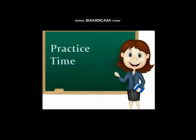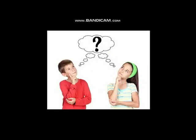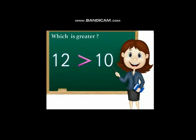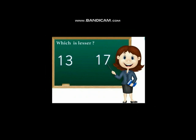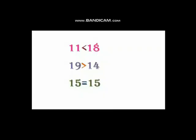Now it is your practice time. I will give you two numbers and you decide which one is greater. The numbers are 12 and 10 — the answer is number 12. Next, 13 and 17 — which is the lesser number? Correct, number 13. Another example: 11 and 18 — which is smaller? Correct, 11 is smaller than 18. Next, 15 and 15 — both are the same number, so the numbers are equal.